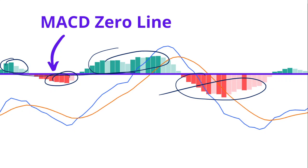When MACD moves above zero, it suggests an uptrend. When MACD is below zero, it suggests a downtrend. The MACD zero line is the line that separates the positive and negative values of the MACD line and histograms.